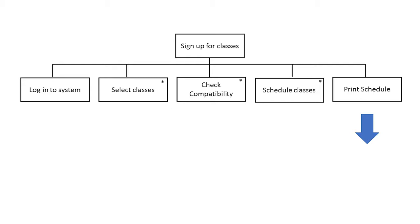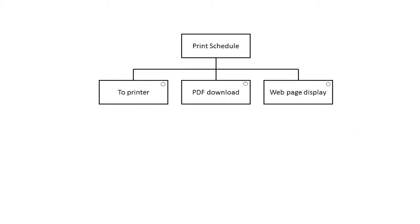The boxes with the asterisk in the upper right-hand corner denote tasks that may be done iteratively. The last step is to print the schedule, although there are options for doing so, selecting among the options denoted by the small circle in the upper right-hand corner of the box.